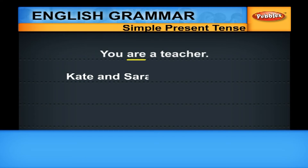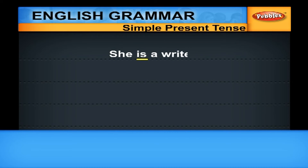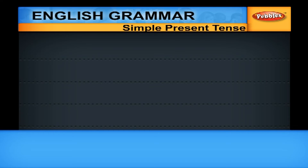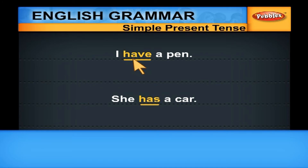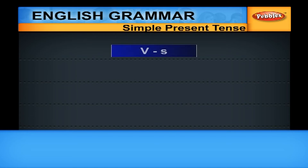For example: TOM IS A SINGER, or KATE AND SARAH ARE TEACHERS, SHE IS A WRITER, or AMANDA IS A WRITER, IT IS A DOG, THEY ARE CATS. Similarly, we can say I HAVE A PEN, SHE HAS A CAR — here you are using an auxiliary verb as a main verb. When the noun is in the plural form, you have to use the base form of the verb — the V0 form. If the noun is singular, you have to use the VS form, that is, add S to the base verb.